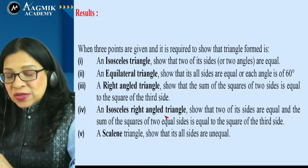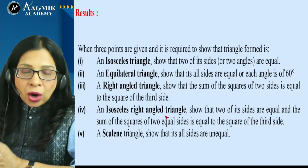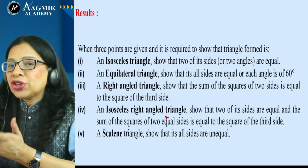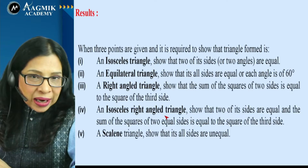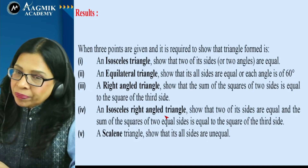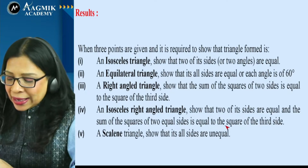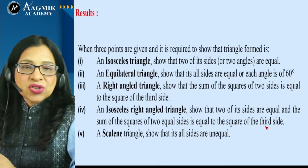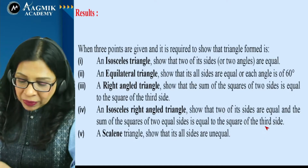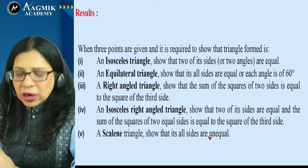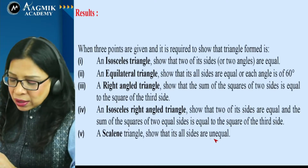If the triangle is both isosceles and right-angled, verify Pythagoras theorem and show the two non-hypotenuse sides are equal. For a scalene triangle, show all three sides are unequal. If four points are given and you need to show the quadrilateral formed is a square, show all four sides are equal, and the diagonals are also equal and perpendicular.